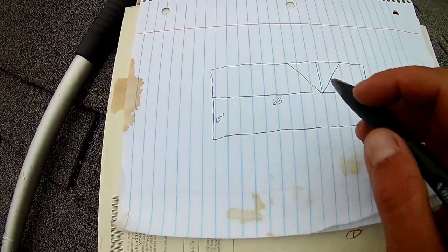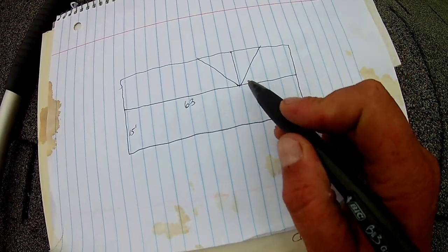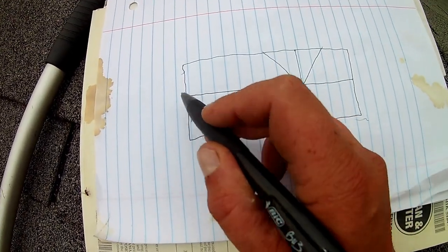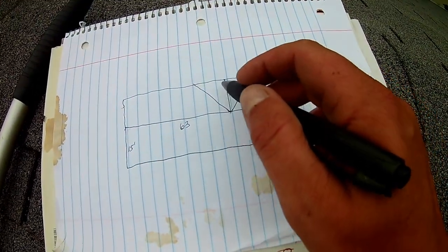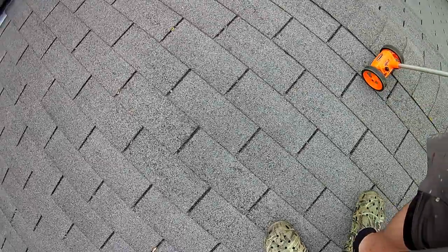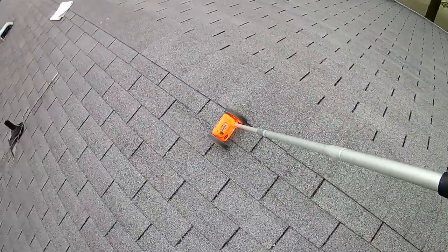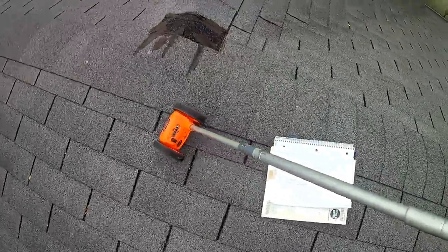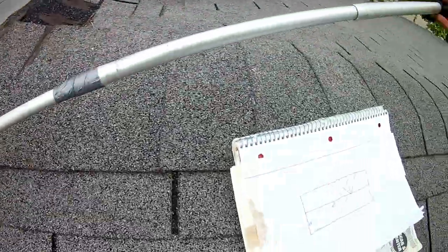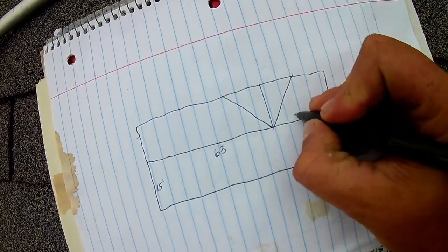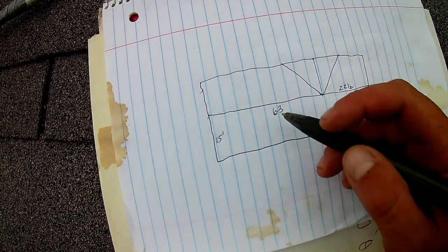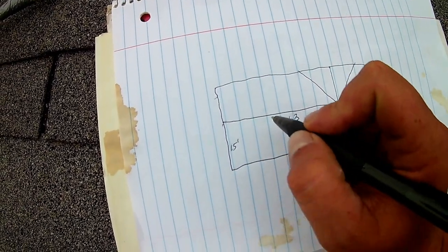Now the next thing we're going to want to do is we're going to want to get this length from here to here and this length from here to here. That's going to be important when you try to figure out the square foot of these triangles here. So we know that's 22 and a half.